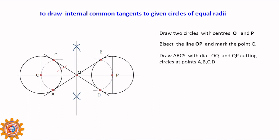This gives the internal common tangents — the tangent line is common to both circles, like AB and CD. This method is used for circles of equal radii.